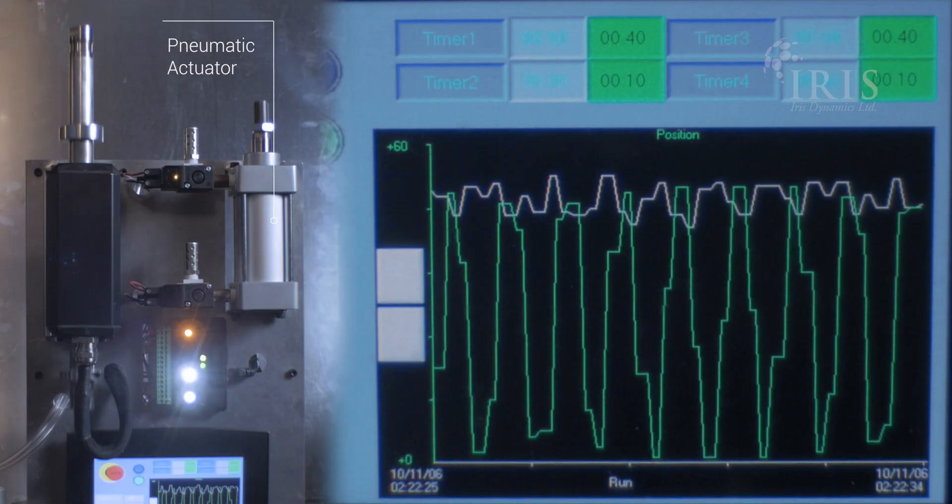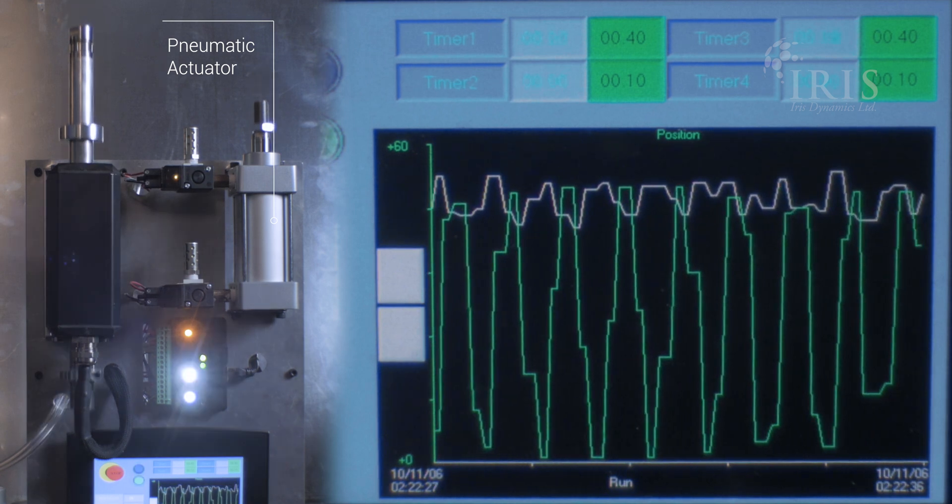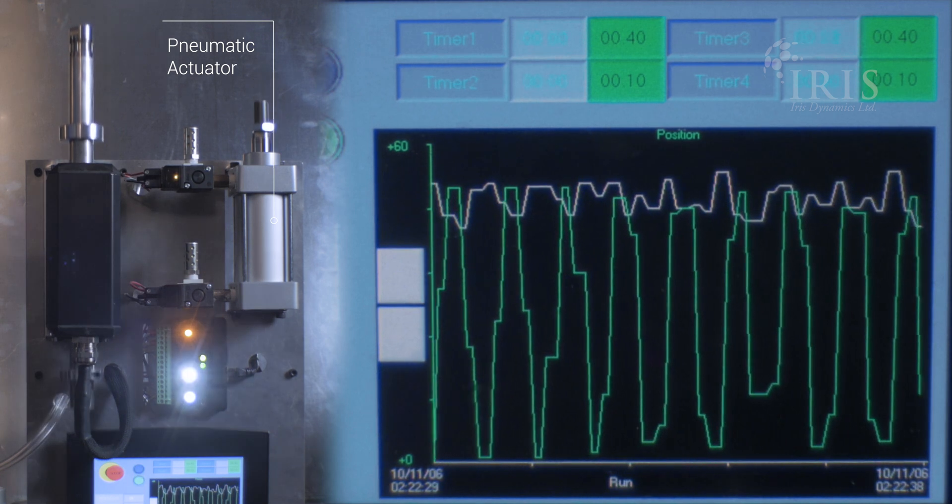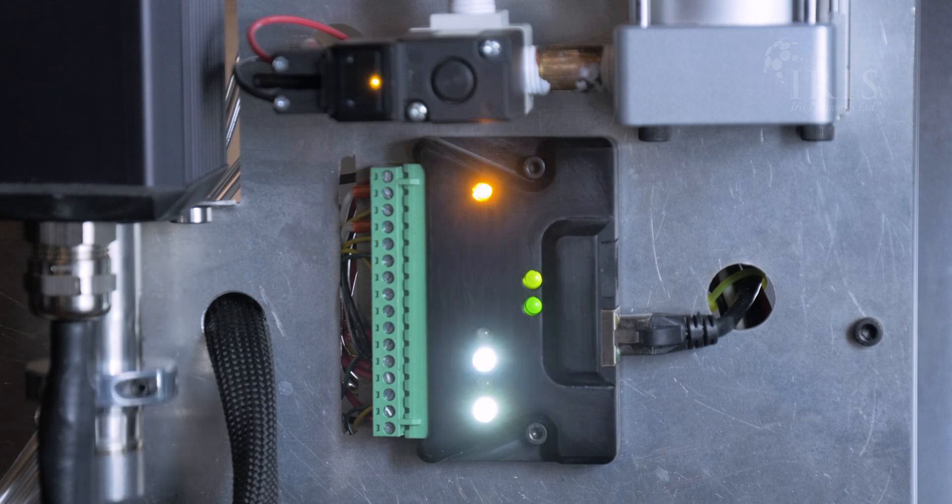In this demonstration, the IO Smart Hub and the pneumatic actuator are receiving the exact same control signals. There is no need to replace or reprogram existing PLCs or control equipment.